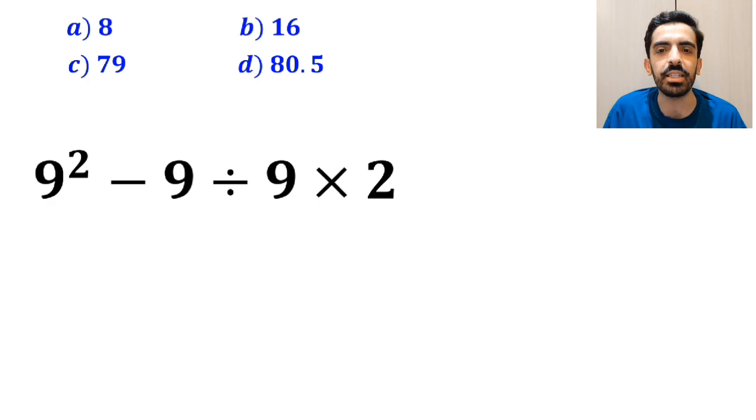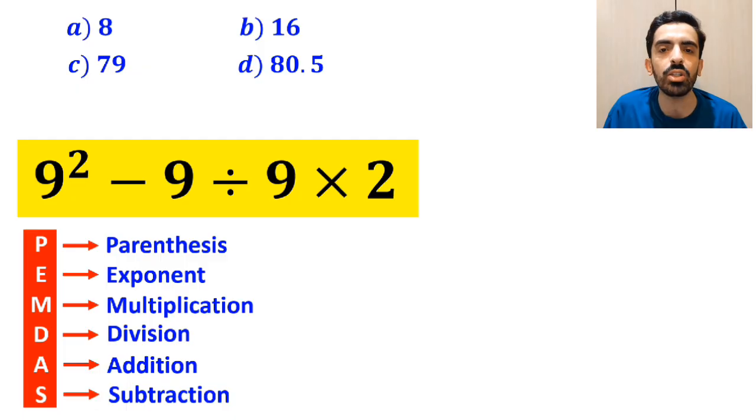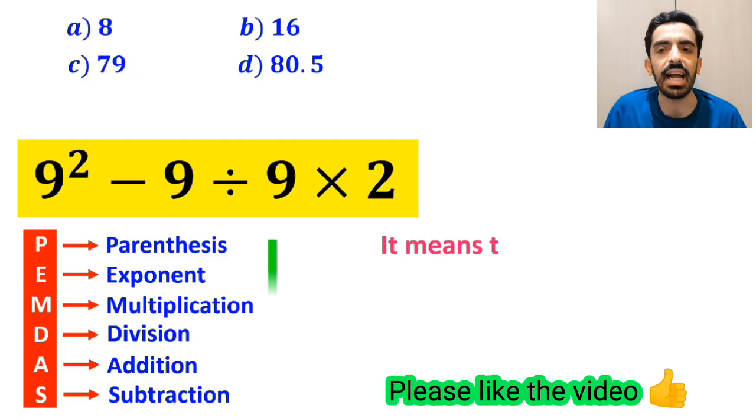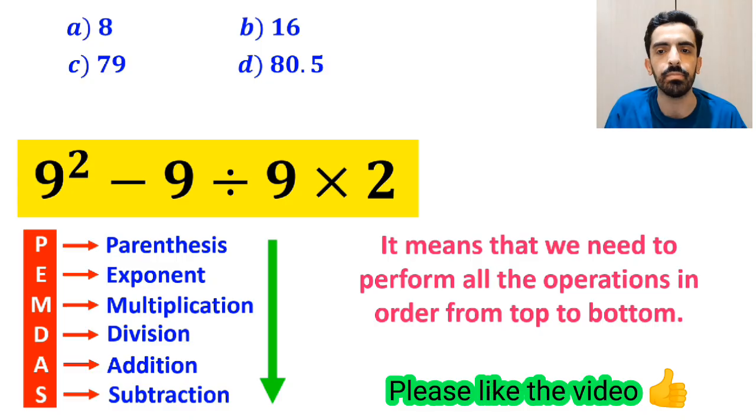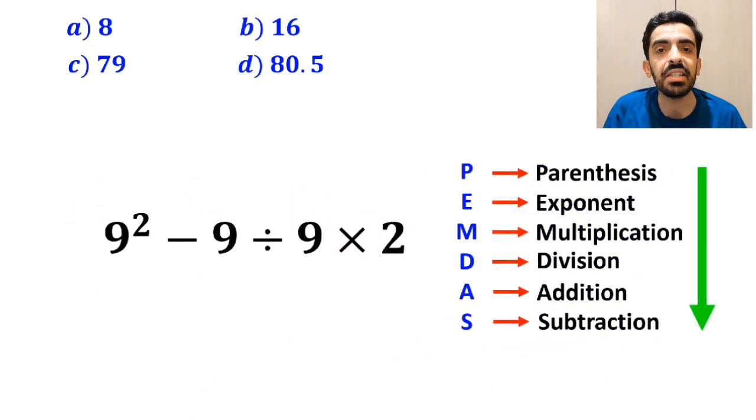Now, let me show you step by step how to solve this expression properly. To solve this problem, we must follow the PEMDAS rule. It means that we need to perform all the operations in order from top to bottom. As you can see in the image, in this expression, first we have an exponent, then a subtraction, followed by a division, and finally a multiplication.